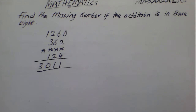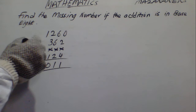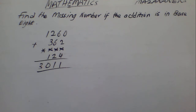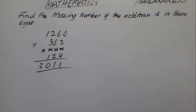Alright, good student. Today we'll be solving one problem in base system operation. In this case we'll be finding the missing number when the addition is in base 8. So this is addition and we are told it is in base 8. I always like to simplify it by first changing it to base 10, which is the common base, and then do the addition.